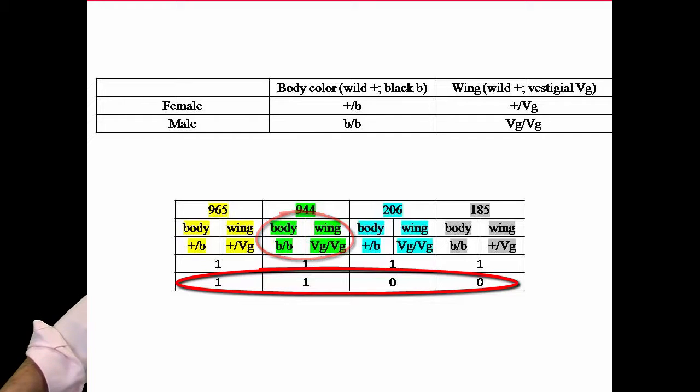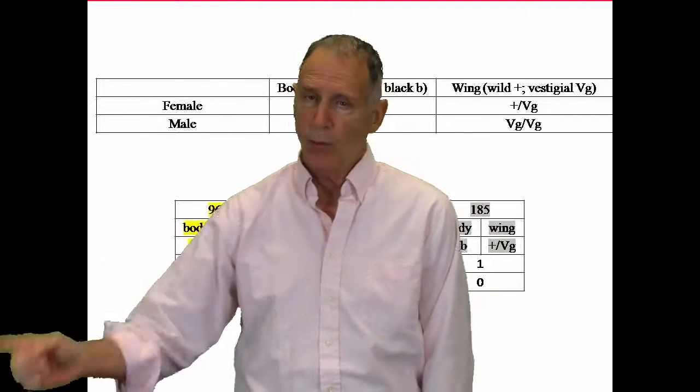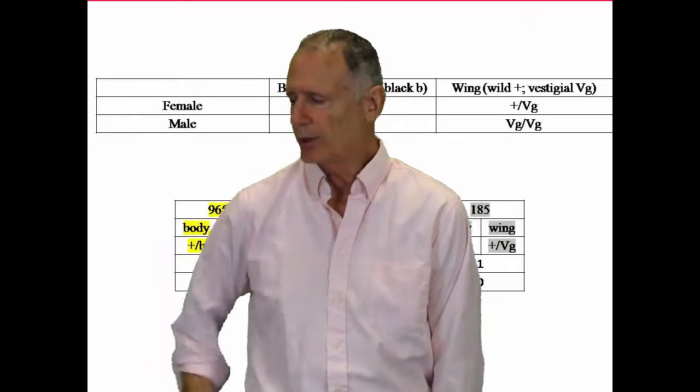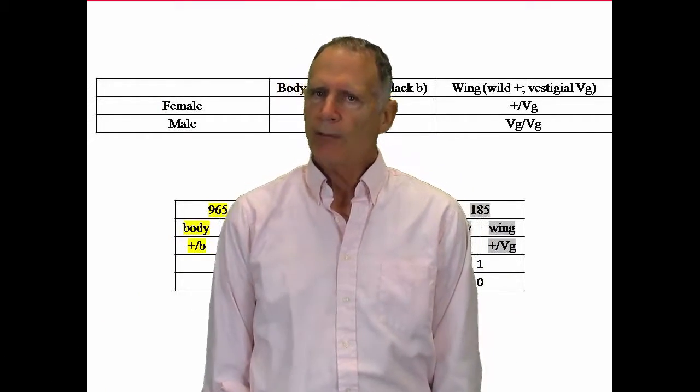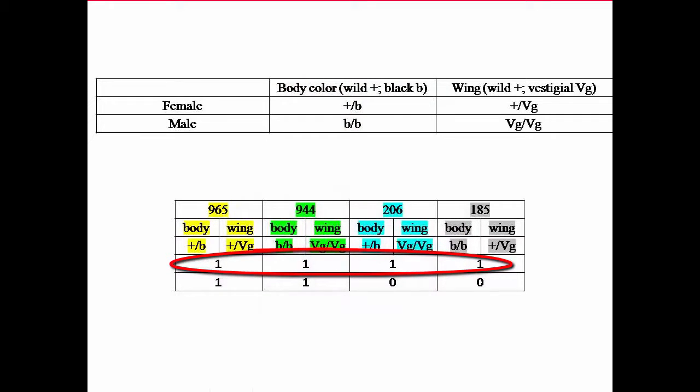So instead of getting 965 and 944 with the 206 and 185, it should be a total of the first two in a 50-50 ratio or a one to one ratio. If you have them on different chromosomes, though, as I've shown down here, you should have a one to one to one to one ratio.